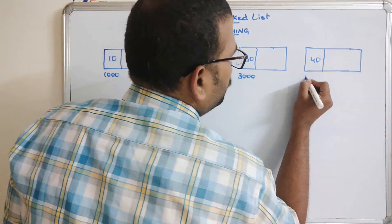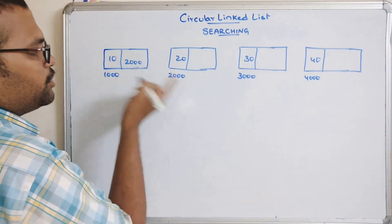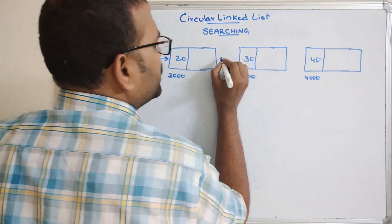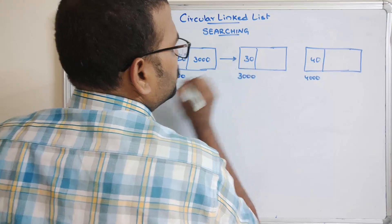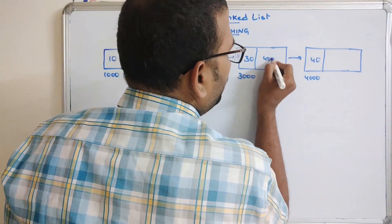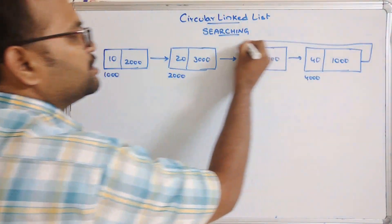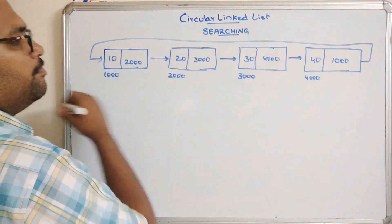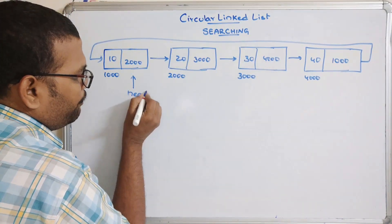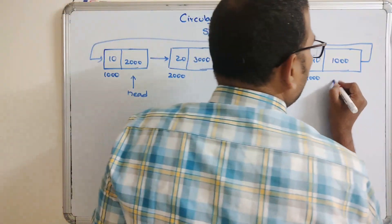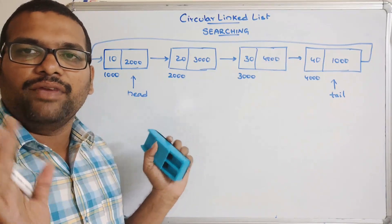I'm taking four nodes: address 1000 for the first node, 2000 for the second node, 3000 for the third node, and 4000 for the fourth node. The link from each node to the next is established — 2000 in the first node, 3000 in the second, and so on. The last node holds the address of the first node because it is a circular linked list, so there is a link from last node back to first node. Head points to the first node and tail points to the last node.